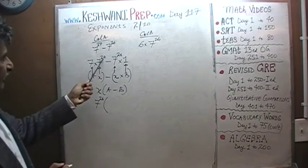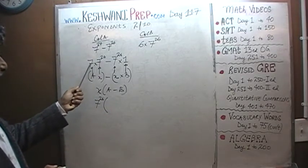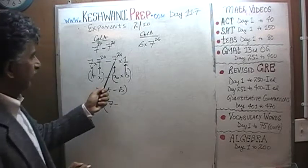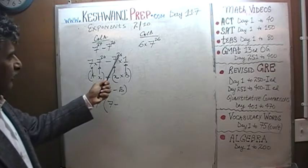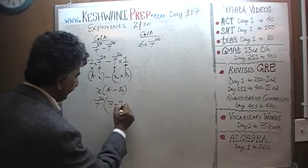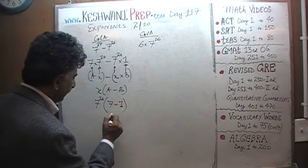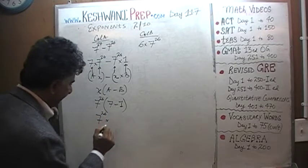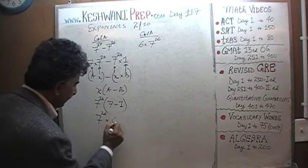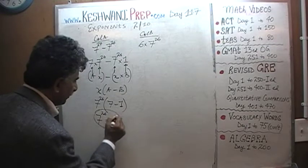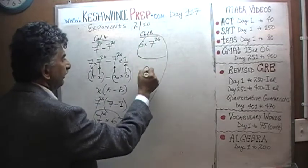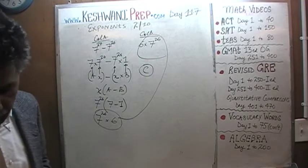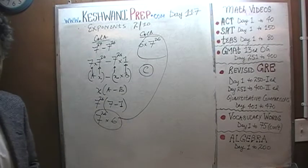So 7 raised to 26 is the common factor that comes out. Once we take out 7 raised to 26 from here, we are left with 7. And once we take out 7 raised to 26 from the second term, we are left with 1. So it's 7 raised to 26 times (7 minus 1), which is 6 — which is exactly what we have in Column B. The answer is C. These two quantities turned out to be equal.